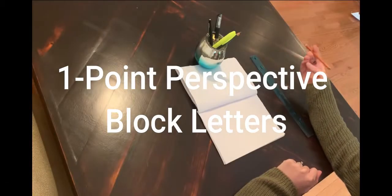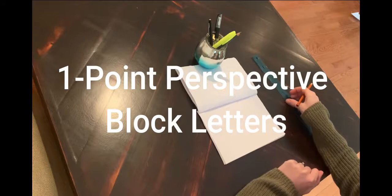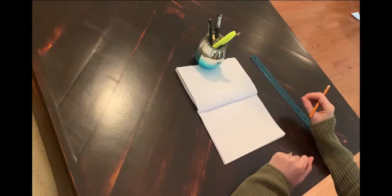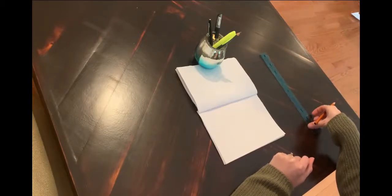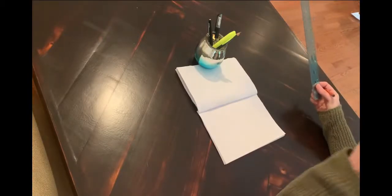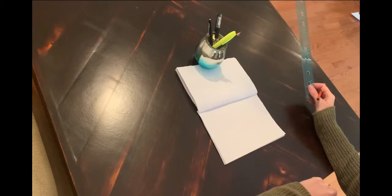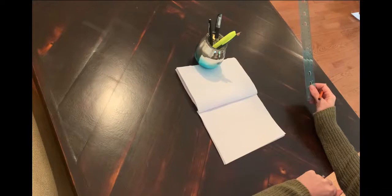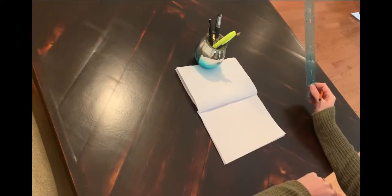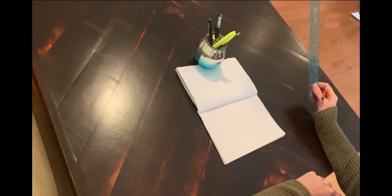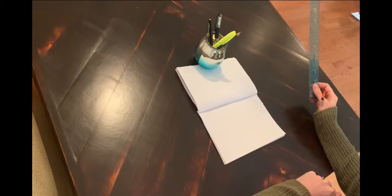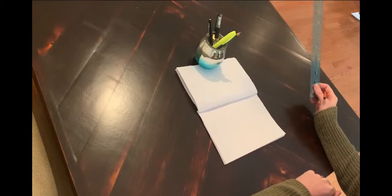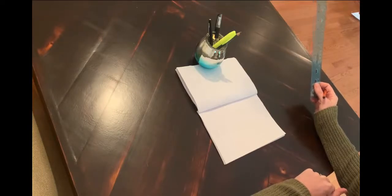The first perspective technique I'm going to show you is one-point perspective and how to make block letters. I'm going to demo two letters - one more angular letter and one more circular letter. You can choose to do your initials for your practice or whatever letters you want, but I'm going to do two letters that are very different on purpose just to have it be a useful demo for you.